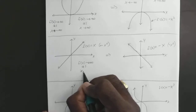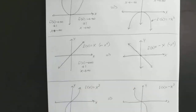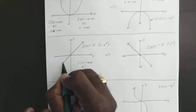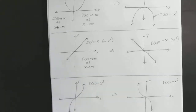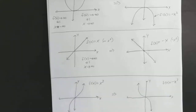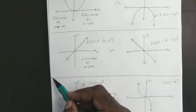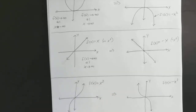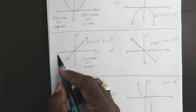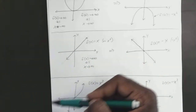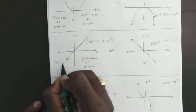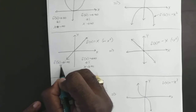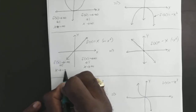As X gets really close to infinity, on the other side, as X is getting smaller or going in the negative direction, f(x) is getting smaller and smaller and smaller, getting lower and lower, approaching negative infinity. So if you plug in X equals negative a billion, f(x) is going to be really far down there. f(x) approaches negative infinity as X approaches negative infinity.